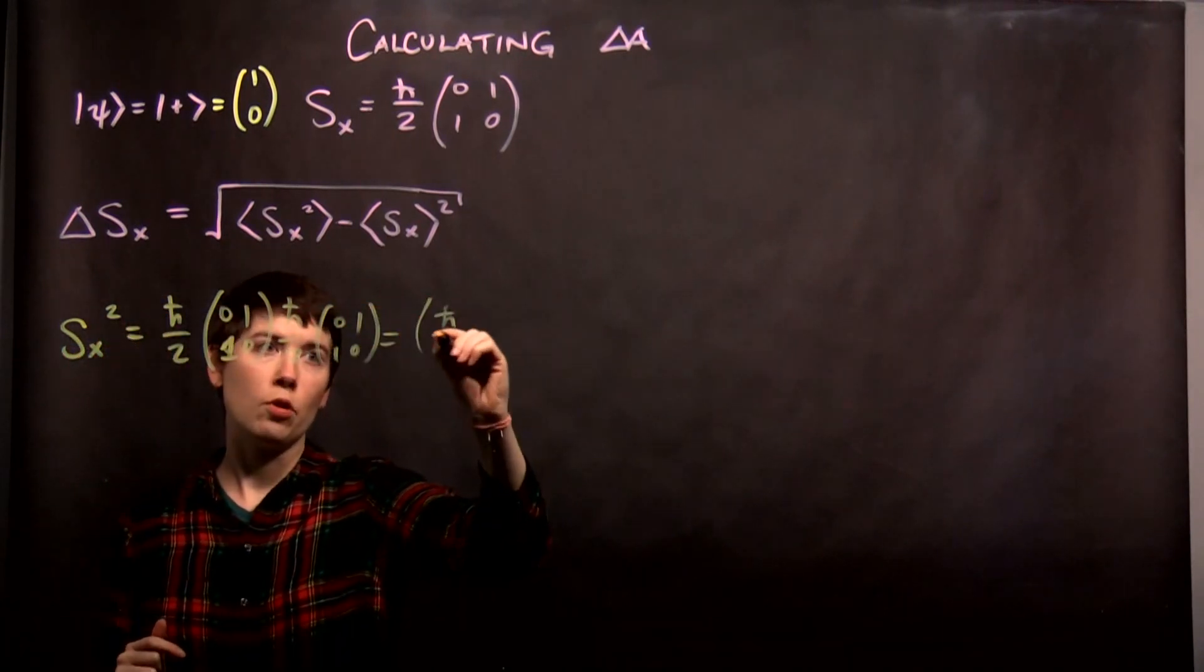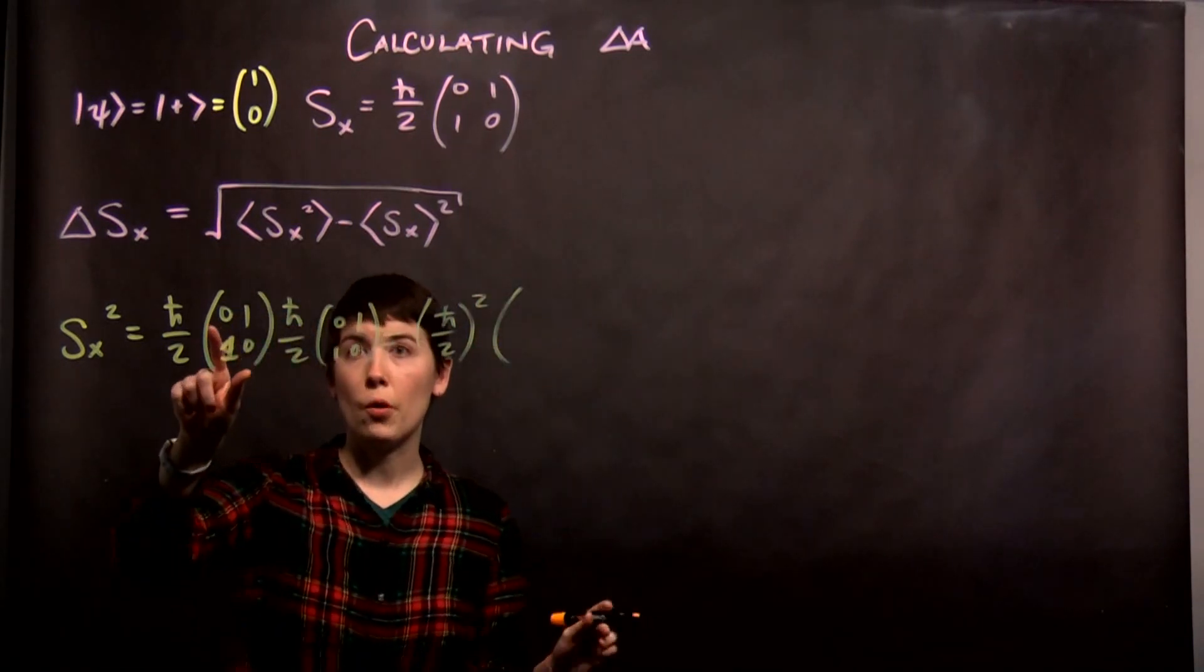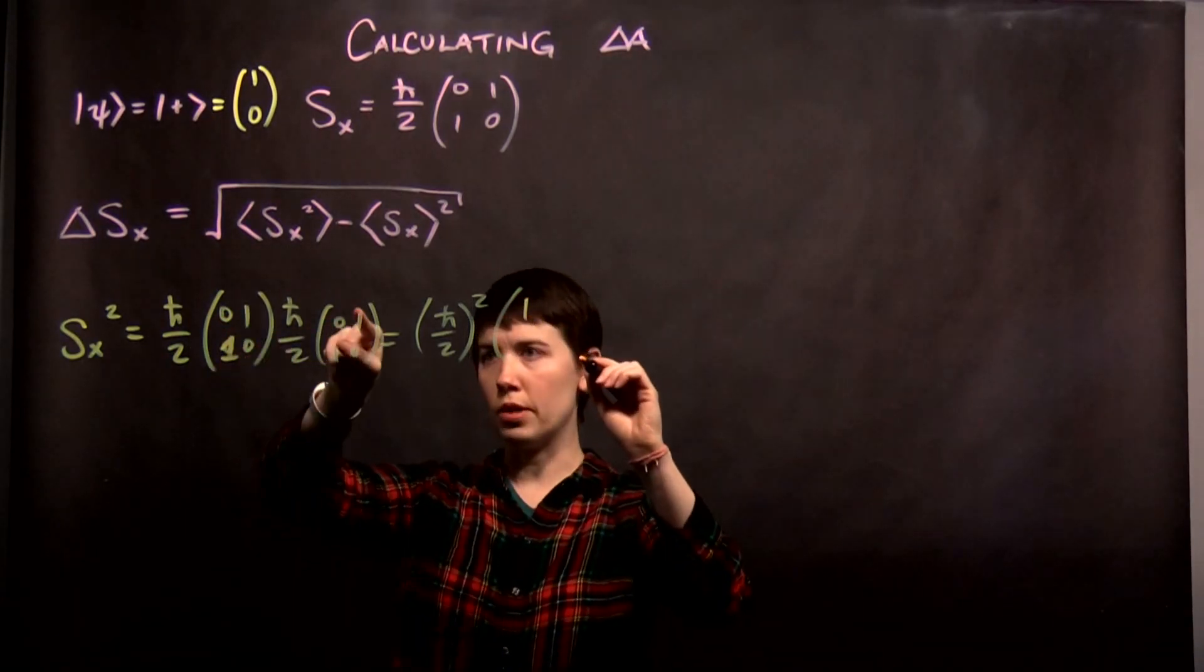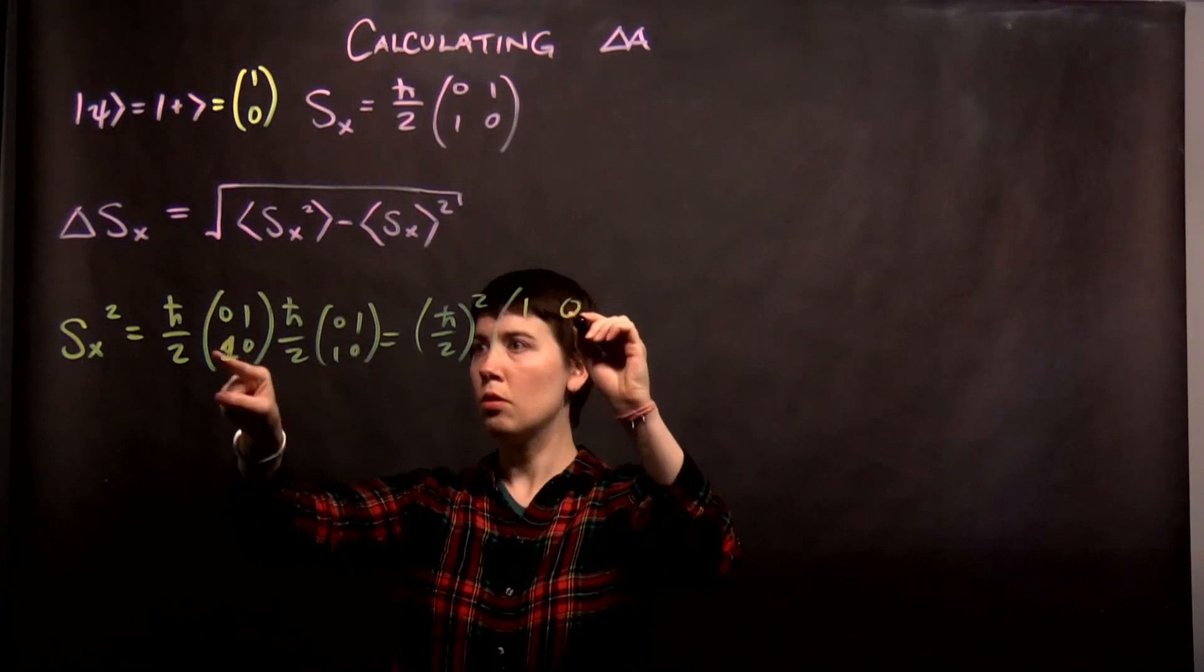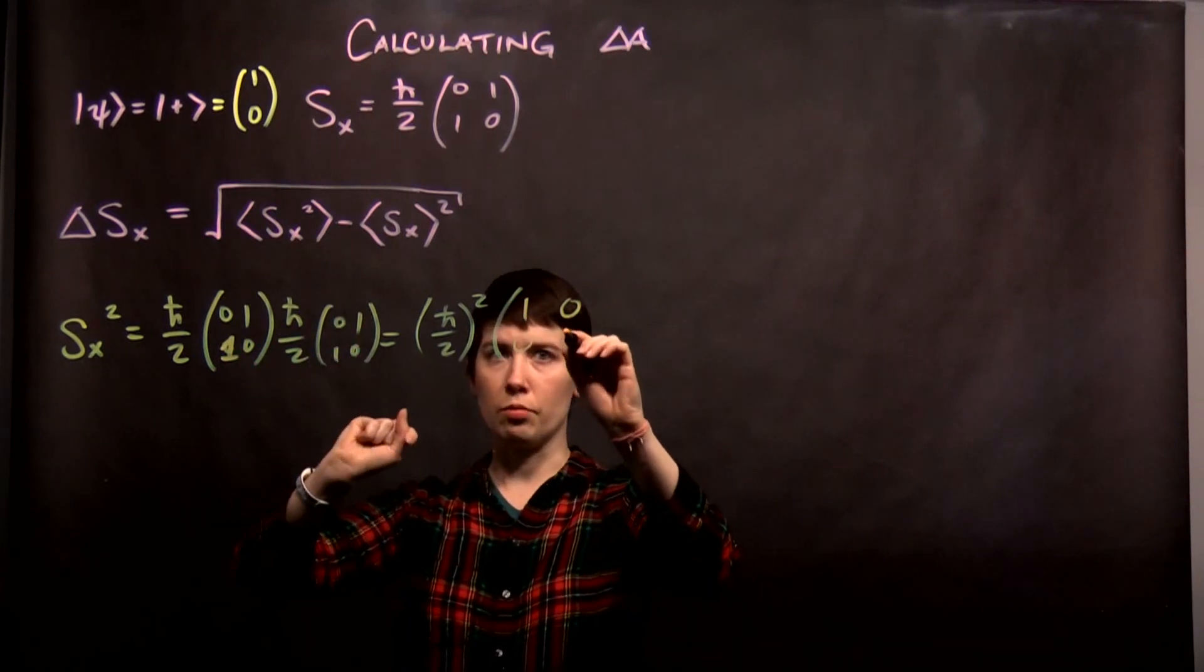So we have H bar over 2 squared. And then we're going to get a 2x2 matrix. So row times column. 0-1 times 0-1 gives me 1. 0-1 times 1-0 gives me 0. 1-0 times 0-1 gives me 0. 1-0 times 1-0 gives me 1.